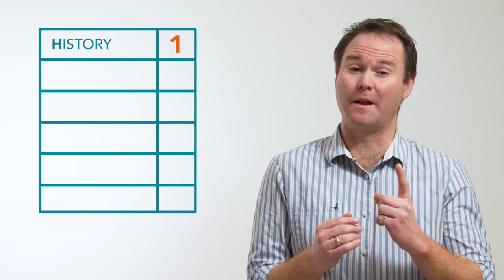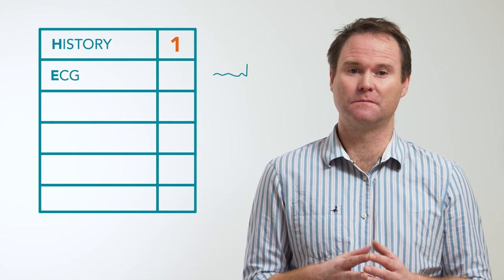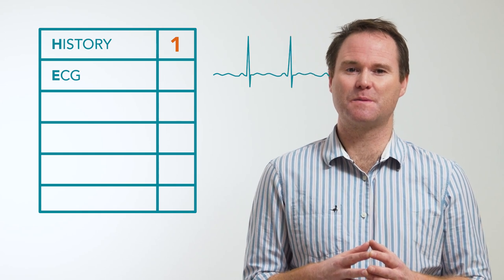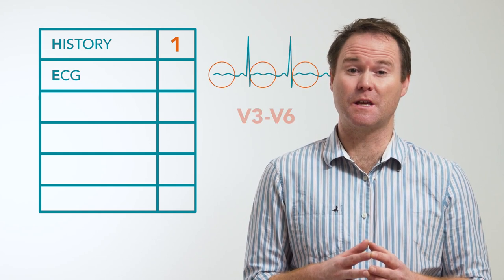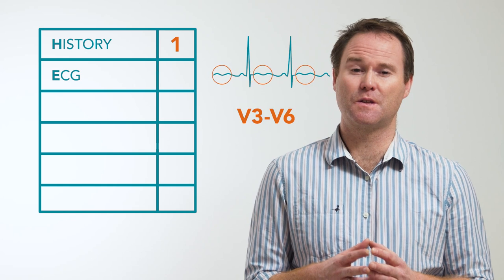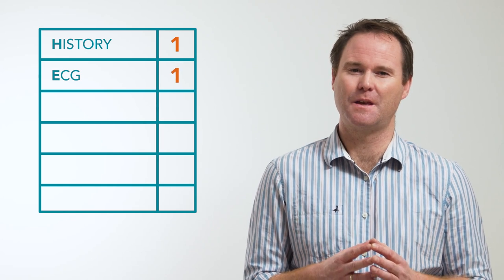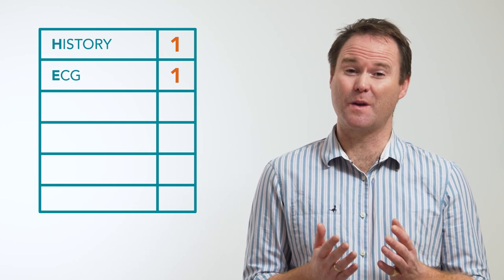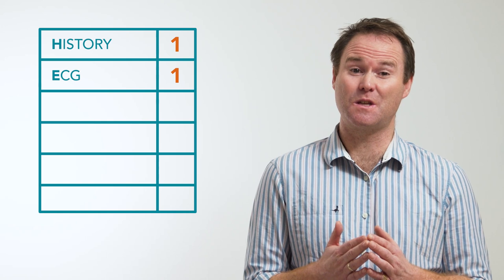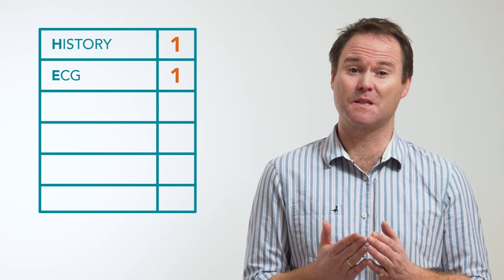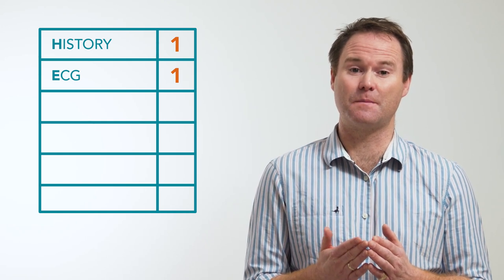That was interesting because the history did not sound like classic angina, but there were certainly elements suggestive of cardiac ischemia. So I think this history would score a one. Now for the ECG — there is some non-specific T-wave inversion in V3 to V6, so this would also score a one. If however we had an old ECG that showed this was new, we might consider scoring this a two, as it could represent new ischemia.